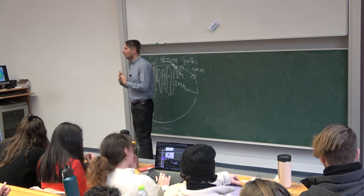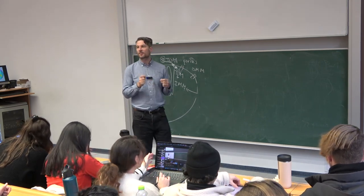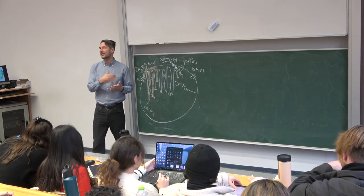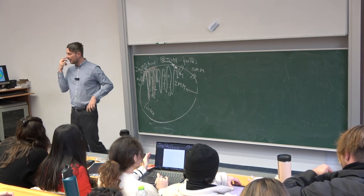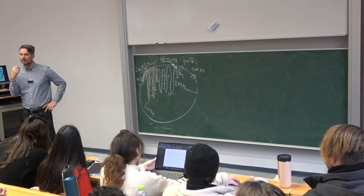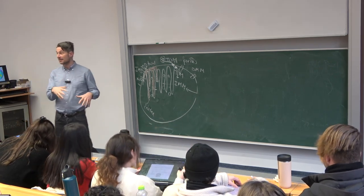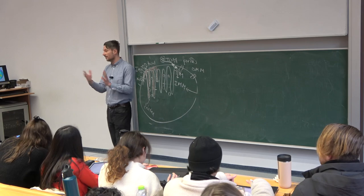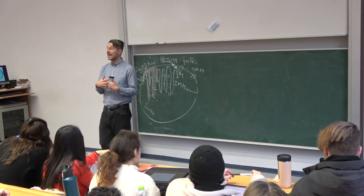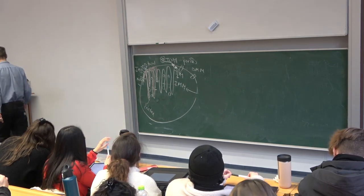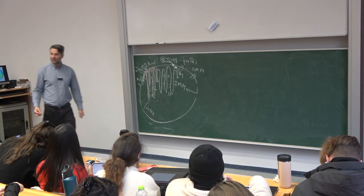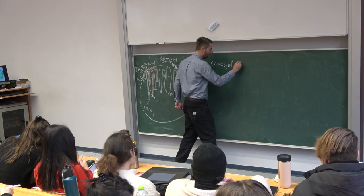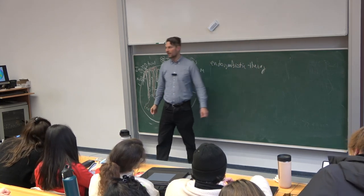All the differences we talked about - the presence of DNA, ribosomes, and other features - have led people to think that maybe mitochondria were originally a distinct organism which ended up being engulfed by some other organism. In fact, mitochondria are the result of what we call endosymbiosis - this is the content of the endosymbiotic theory of the origin of mitochondria.